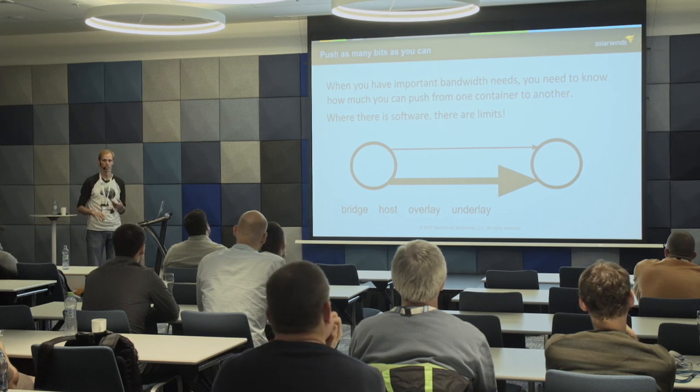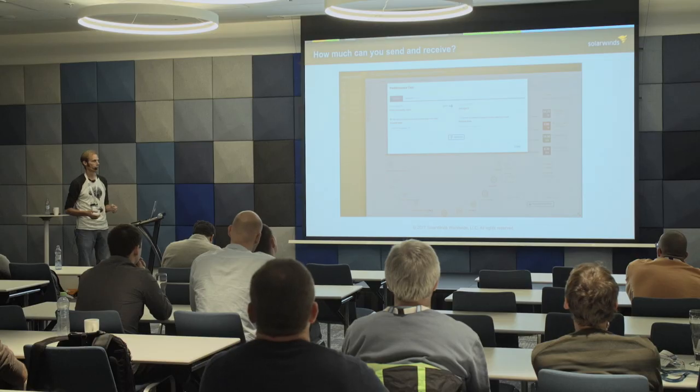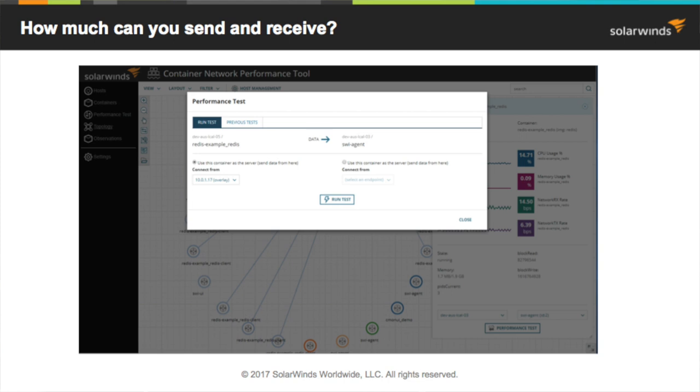There are all these different options with container networking that help with security, VLANs, and more — but you need to create your network in a way that's efficient for your deployment. Our free tool lets you play around, change different drivers and network types — whether bridge networking or different underlay flavors like MAC or IP. It gives you a handy performance test: you select two containers in our UI and run a test to see how much bandwidth you can shove between them, telling you if you're getting sufficient bandwidth for your application's needs.